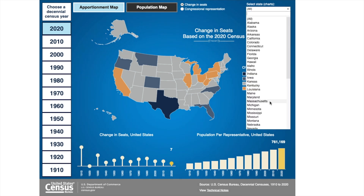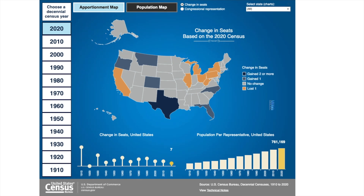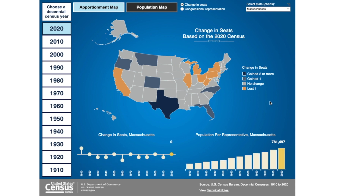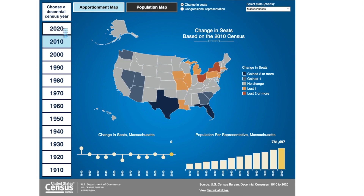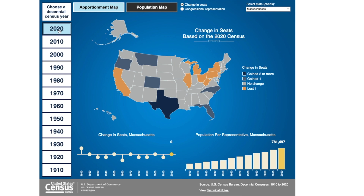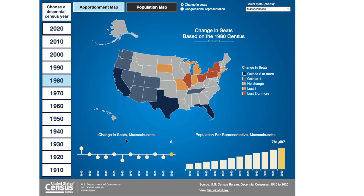I will select Massachusetts again. Your map will go back to showing data for your selected state. But now you can change from one year to another while keeping your selected state as the default geography. Let's go from 2020 to 1980. You'll notice that Massachusetts is now the locked view on this map.